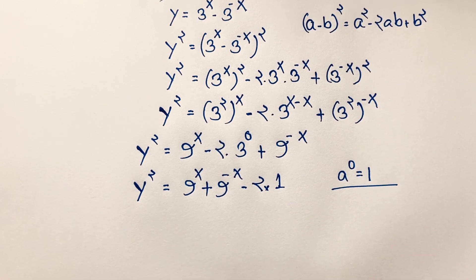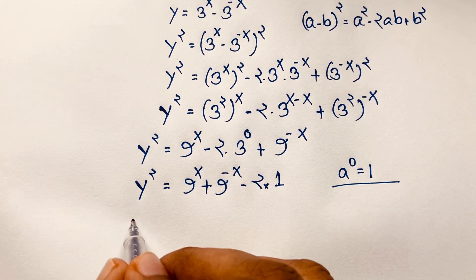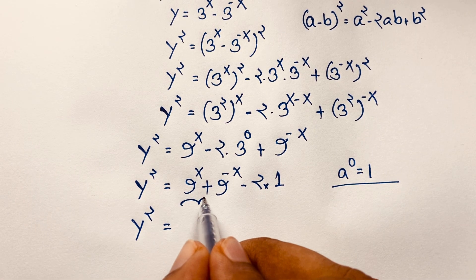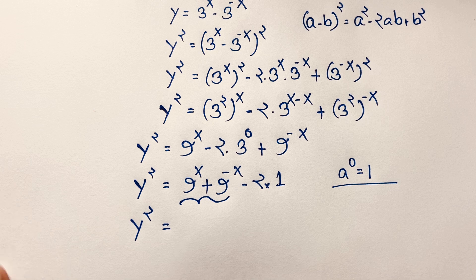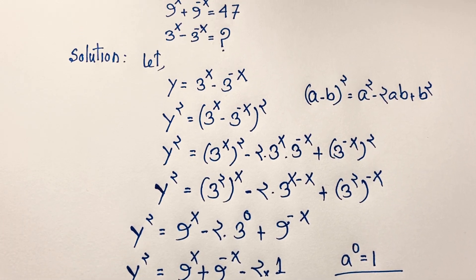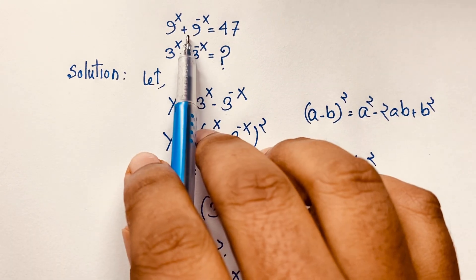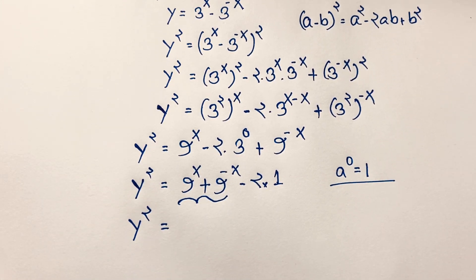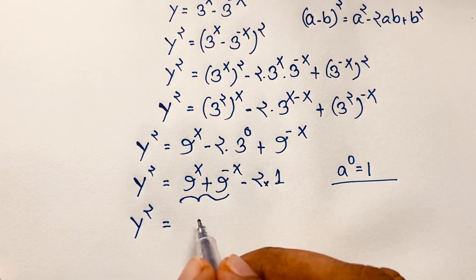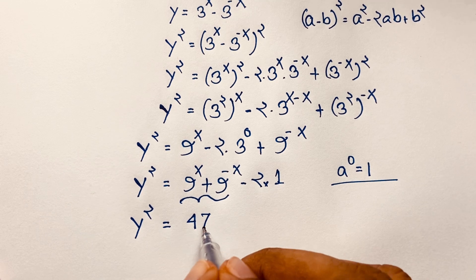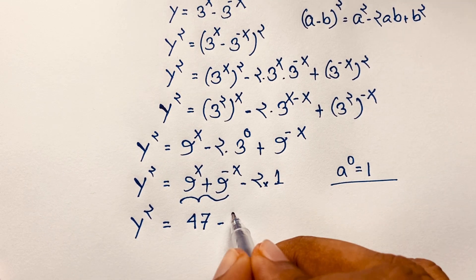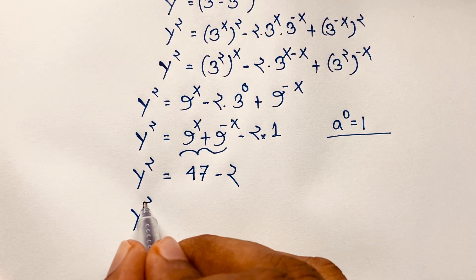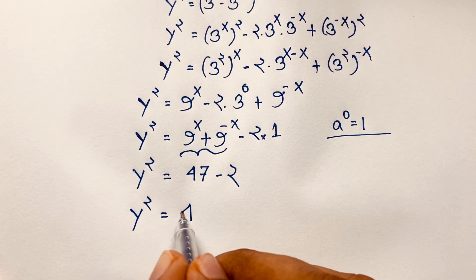Now at this moment we can see that y squared equals 9 to the power x plus 9 to the power negative x, minus 2. Remember that our question gives us 9 to the power x plus 9 to the power negative x is equal to 47. So substituting that in, we get y squared equals 47 minus 2, which is 45.